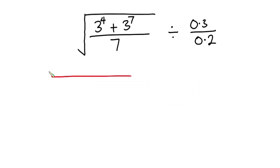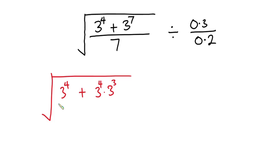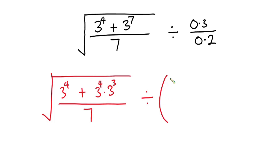We have the square root of three to the fourth power, and I'll write three to the seventh power as three to the power four times three to the power three. This is divided by seven. The whole thing is also divided by 0.3, which is the same as 3 over 10, divided by 0.2, which is the same as 2 over 10.